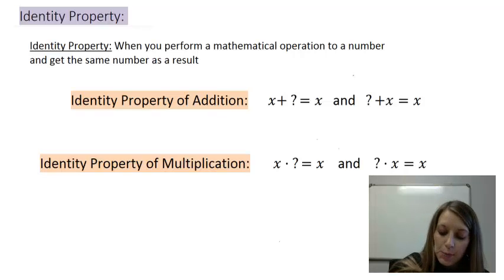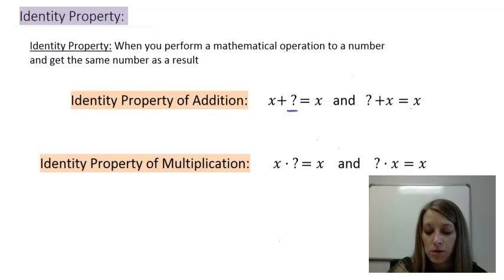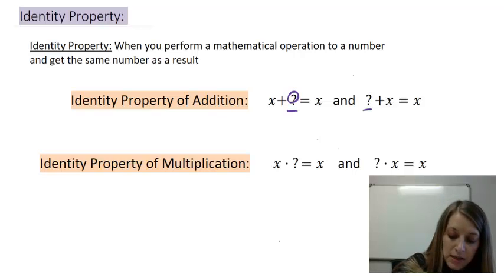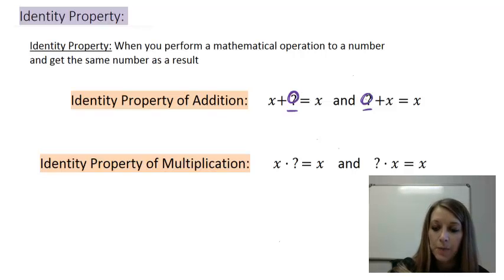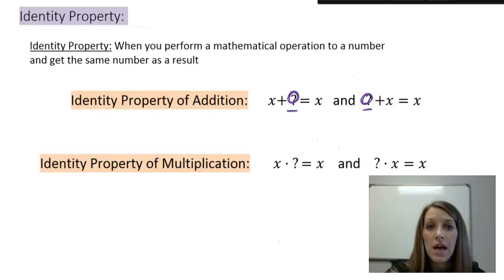So, in addition, x plus what is going to come up to be x. Now, I've written this in two different ways because it applies with the commutative property that we saw first. It doesn't matter which order we add these two numbers in. So, what plus x gives you x. Hopefully you already have this number in mind. If not, I suggest you pause the video and do some thinking about it. And, of course, the answer to this is zero. X plus zero gives me x, and zero plus x gives me x. So, this means that zero is the identity in our addition operation.